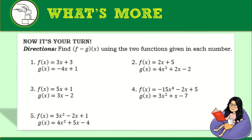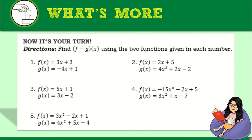What's more? Now let's check your understanding — it's your turn. I prepared a 5-item assessment showing 2 functions in each number. Your task is to find f minus g of x. For example, number 1: f of x equals 3x plus 3 and g of x equals negative 4x plus 1. You may pause the video, take a screenshot, or copy it in your mathematics notebook.